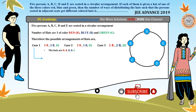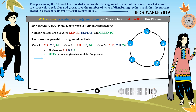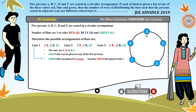Let us consider the hats color-wise: two red, two blue, and one green. Since green is only one in number, we start by analyzing where the green hat is placed. This green hat can be given to any of the five persons, because no one has a hat currently and the condition will not be violated. So the green hat can be given in five ways. For the time being, let's say person A has the green hat.